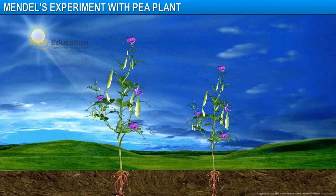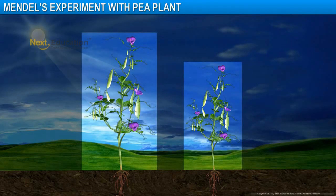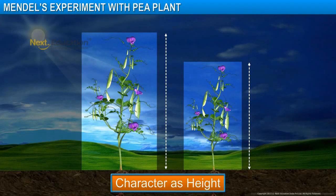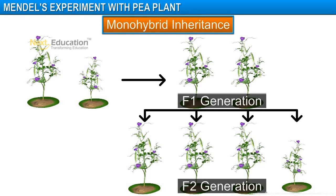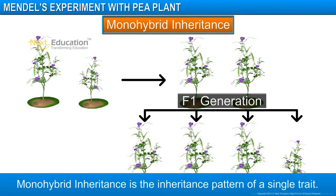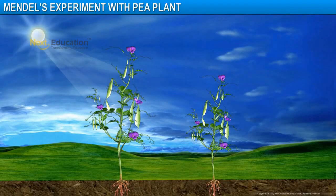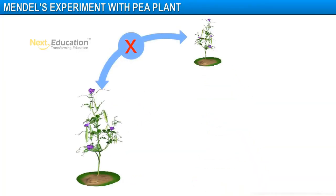Let's first understand Mendel's experiment in which inheritance of only one character is used — for example, the height of the plant. Such an inheritance pattern in which only one trait is used is referred to as monohybrid inheritance. Mendel used pure-breeding tall plants with the phenotype TT and pure-breeding dwarf plants with the genotype tt to reproduce by cross-pollination.